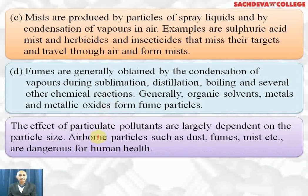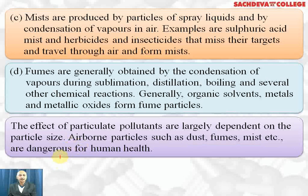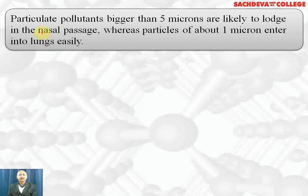The effects of particulate pollutants are largely dependent upon their particle size. Airborne particles such as dust, fumes, mist etc. are dangerous for human health. Particulate pollutants bigger than 5 microns are likely to lodge in nasal passages causing cough, cold etc., whereas particles of about 1 micron enter into the lungs and cause respiratory problems.